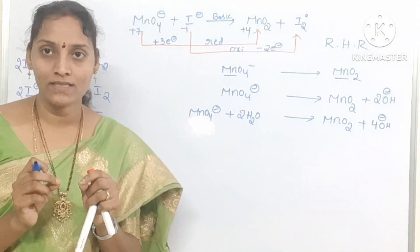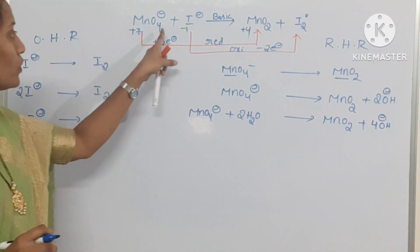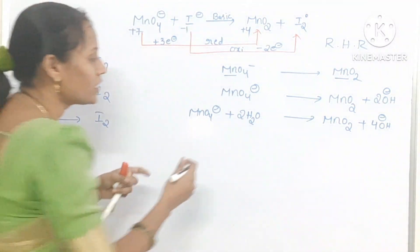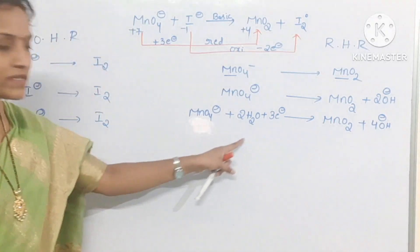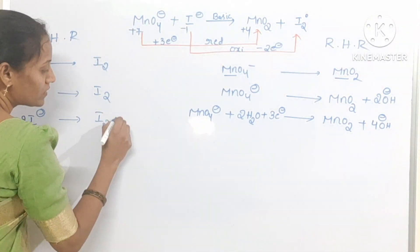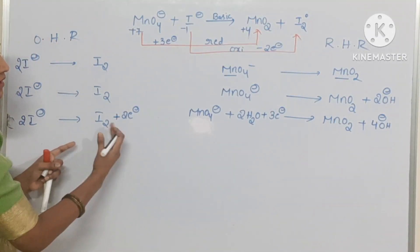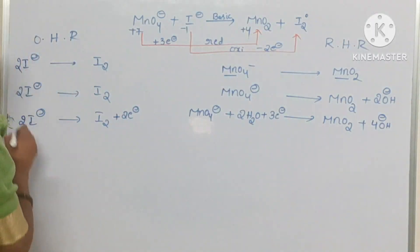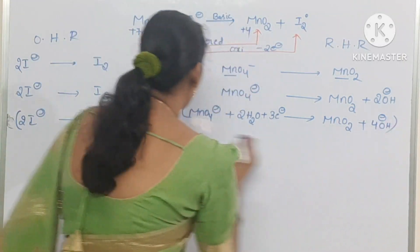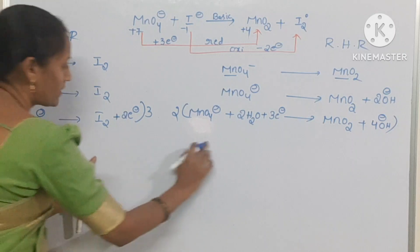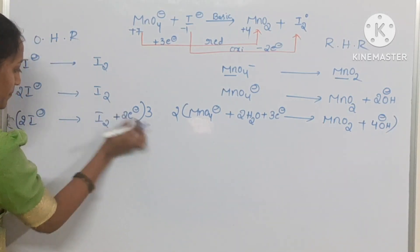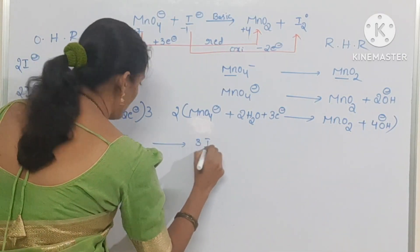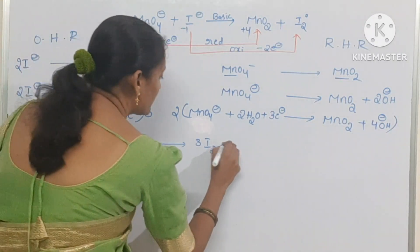The next step is to balance charges. For the reduction half reaction (MnO4⁻ to MnO2), add 3 electrons to the left side. For the oxidation half reaction, add 2 electrons to the right side. To equalize electrons using the crisscross method, multiply the oxidation half reaction by 3 and the reduction half reaction by 2. After multiplication: the oxidation half gives 6I⁻ → 3I2 + 6 electrons, and the reduction half gives 2MnO4⁻ + 4H2O + 6 electrons → 2MnO2 + 8OH⁻.